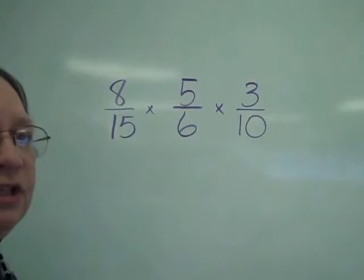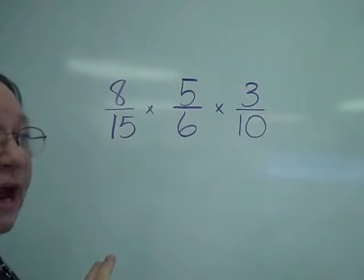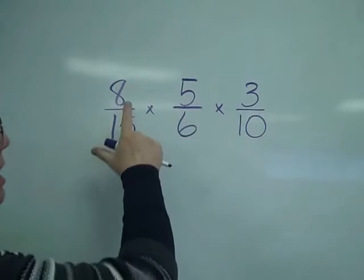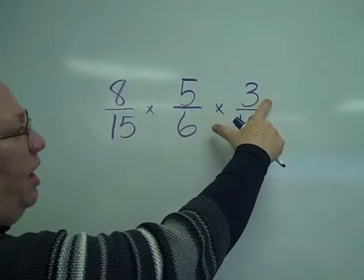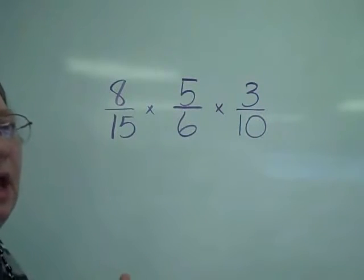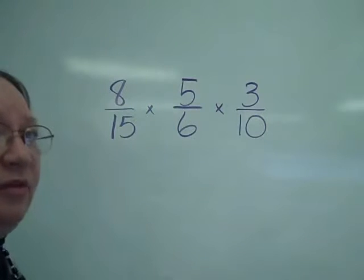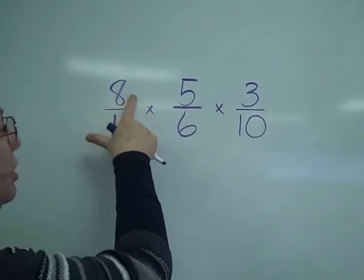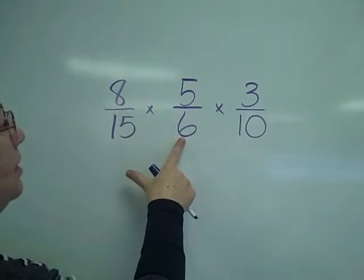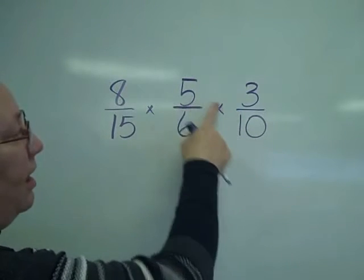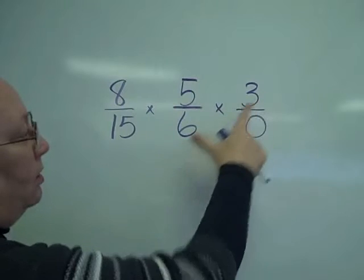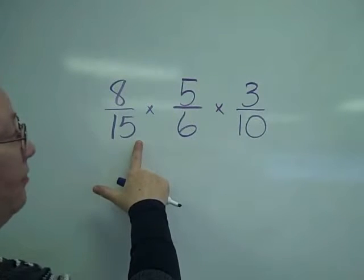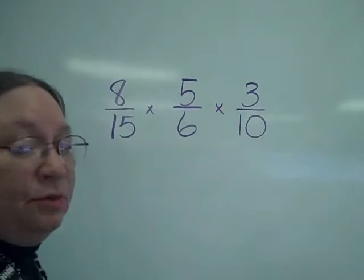Let's look at multiplication of fractions — this time with more than two fractions. By the definition of multiplication of fractions, I would take 8 times 5 is 40, times 3 is 120, which tells me I really need to simplify before I get to the end. Looking at the combinations: there's a 2 I could take out of the 8 and the 6, or a 5 out of the 5 and the 10, or a 3 out of the 3 and the 6, or the 5 and the 15 are divisible by 5, or I could use a 2 with the 8 and the 10.